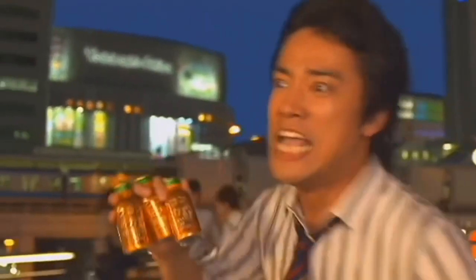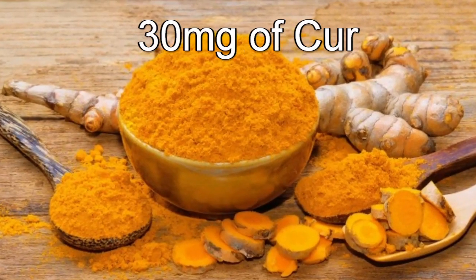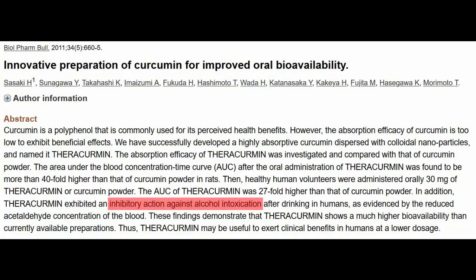Ukonoshikawa translates to the power of turmeric and contains about 30mg of curcumin, which has been used in a study to inhibit alcohol intoxication by reducing acetaldehyde concentrations.